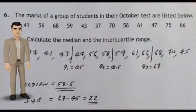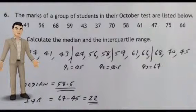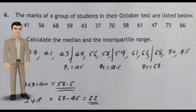We'll firstly put the data in order. Then we can see that Q1 equals 45, Q2 equals 58.5, and Q3 equals 67.